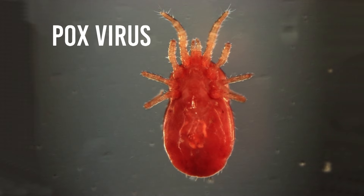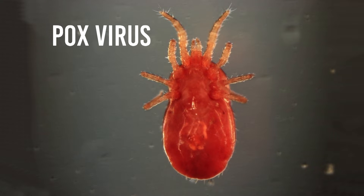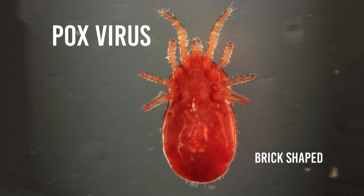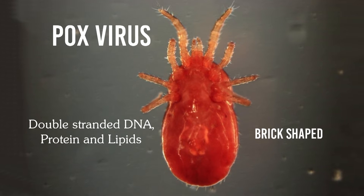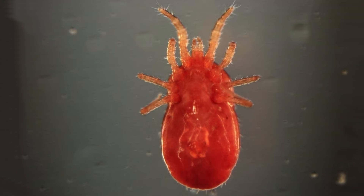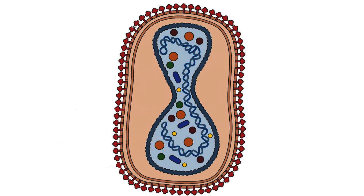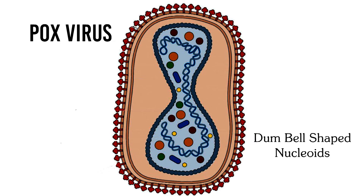Pox viruses are the largest of all viruses and are brick shaped. They contain double-stranded DNA, protein, and lipids. They have a dumbbell-shaped nucleoid surrounded by two membrane layers.